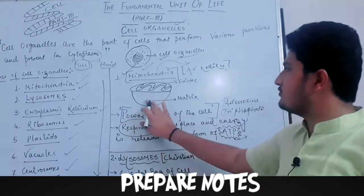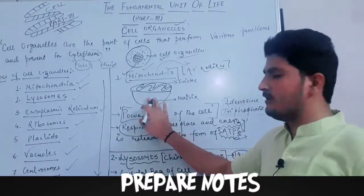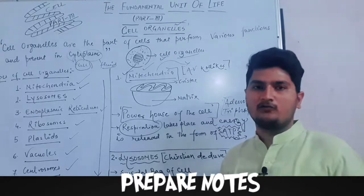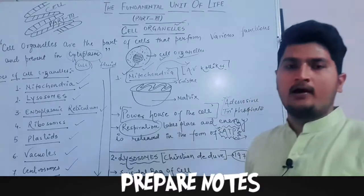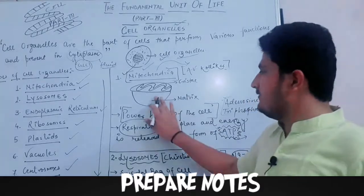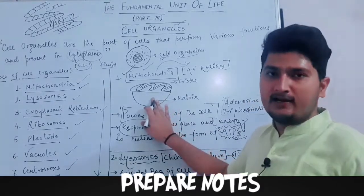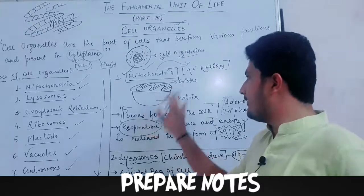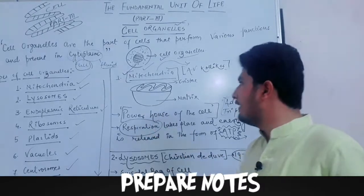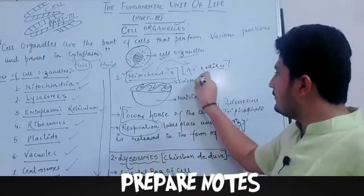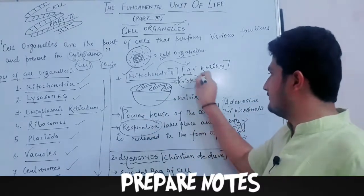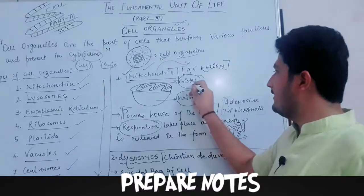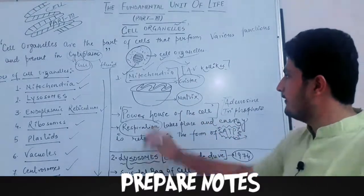This structure of mitochondria is not easily seen under the microscope; it is always seen under the electron microscope. In mitochondria, there are basically two structures: the first is called cristae and the second is called matrix.